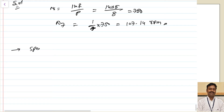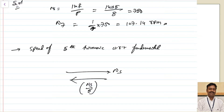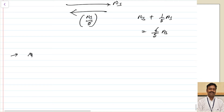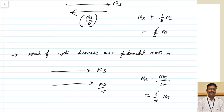Similarly, we can calculate the speed of the 5th harmonic with respect to the fundamental MMF. The 5th harmonic rotates at Ns/5 in the opposite direction to the fundamental. So the relative speed adds: Ns + Ns/5 = 6Ns/5. For the 7th harmonic with respect to the fundamental, both rotate in the same direction, so we take the difference: Ns − Ns/7 = 6Ns/7.